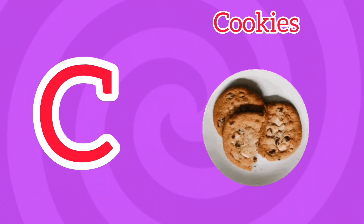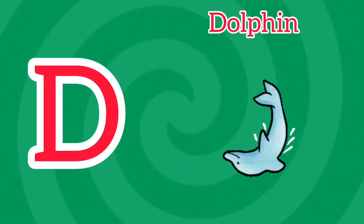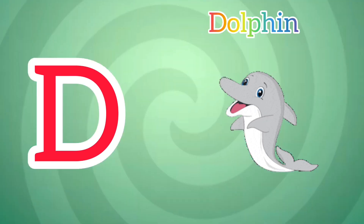C is for Cookie. C, C, Cookie. C is for Cookie. C, C, C. D is for Dolphin. D, D, Dolphin. D is for Dolphin. D, D, D.